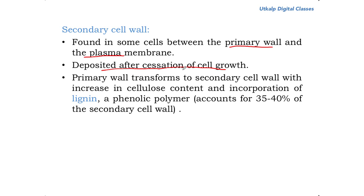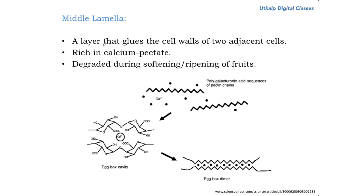The secondary cell wall is a very rigid and hard structure. If deposited in actively growing cells, those cells would never be able to expand. The secondary cell wall forms when the primary cell wall increases its cellulose content and incorporates a phenolic polymer called lignin. Lignin is very strong and gives rigidity to the secondary cell wall. Lignin accounts for 35 to 40 percent of the secondary cell wall.